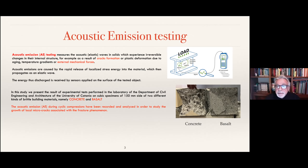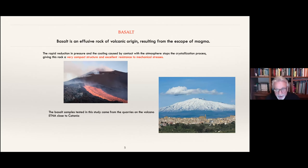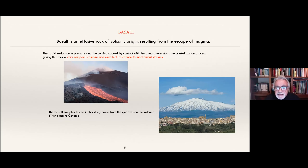Concrete is an artificial conglomerate consisting of cement, water, sand, and gravel within an appropriate recipe, prepared 28 days before the test to allow hardening. The second material is basalt, a very common rock in Sicily near the volcano. When magma cools on contact with the atmosphere, crystallization stops and the result is a very compact rock structure with excellent resistance to mechanical stresses.